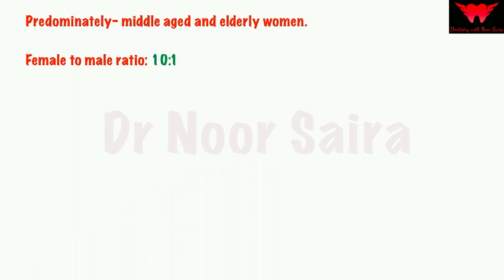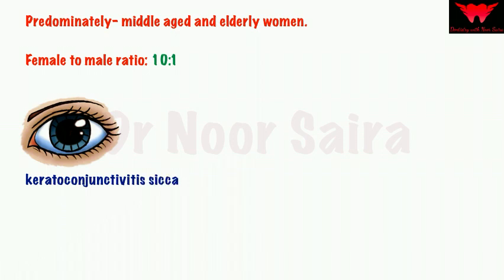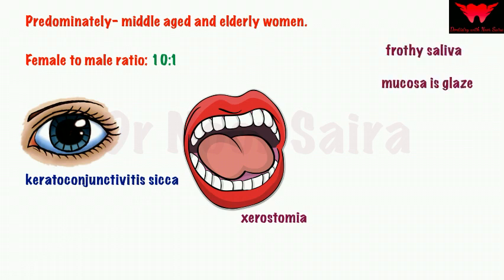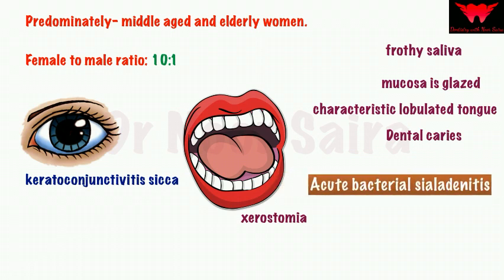Regarding clinical features, the effect on the eye is called keratoconjunctivitis sicca. The patient complains of dry eyes or continuous irritation, and severe lacrimal gland involvement may lead to corneal alterations and conjunctivitis. The second feature is xerostomia — dry mouth. Due to the reduced saliva, the mucosa may appear glazed, there may be characteristic lobulation of the tongue, and increased dental caries. Importantly, Sjögren's syndrome is the most common underlying cause of acute bacterial sialadenitis in ambulatory patients.